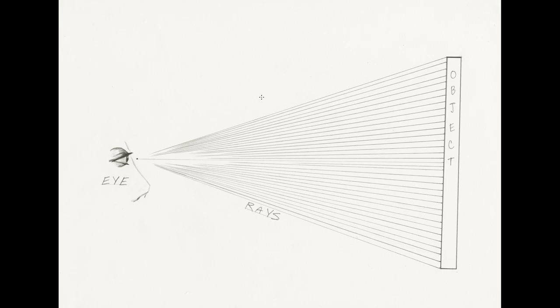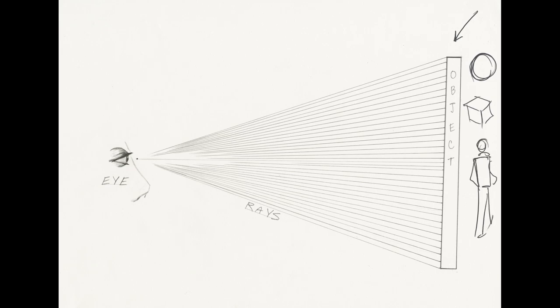In plate number two we're looking at an illustration of an eye and an object — a basic understanding of how we see the object and how it comes to our eye. We have the object over here, and that could be anything — we have an obelisk, but it could be a ball, a box, a tiger, a human figure. It doesn't really matter right now what it is, but any object we're seeing is going to present a series of light rays to us.